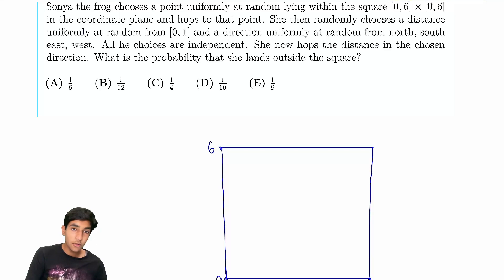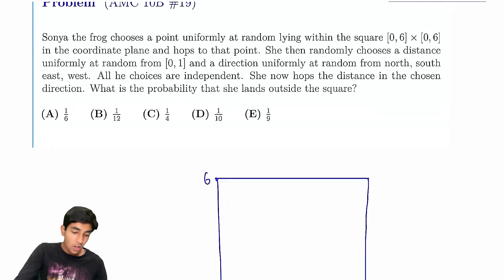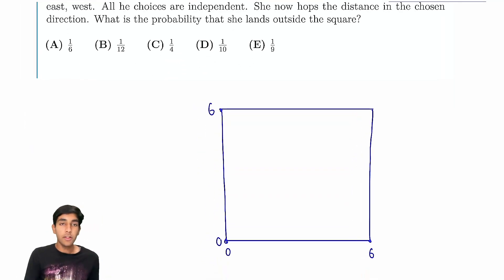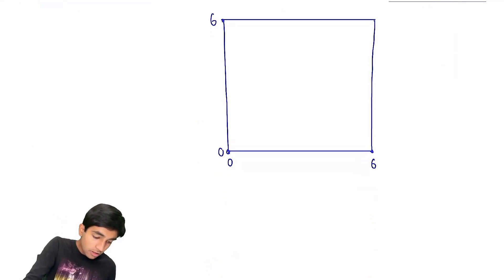So, the trick here is that we have four possible direction choices: North, south, east, west. So, let's just take the first case. Let's say we have east-west. Let's say we pick a direction east-west.